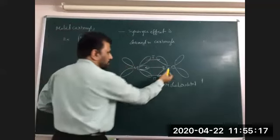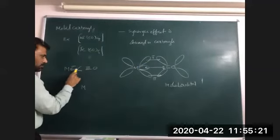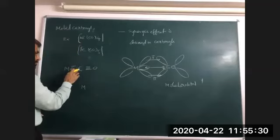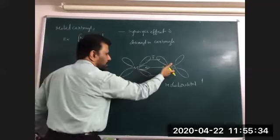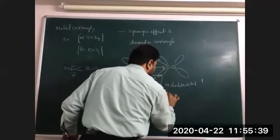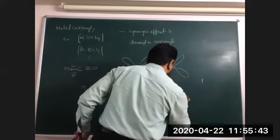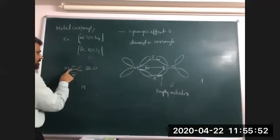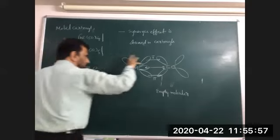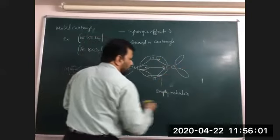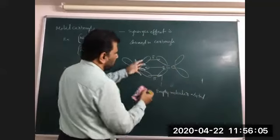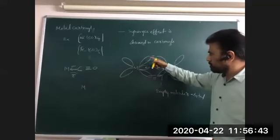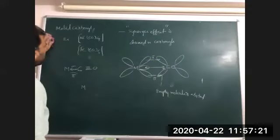The metal has filled d orbitals that overlap sideways with the empty molecular orbital of CO — this is the synergic effect. Carbon monoxide donates a lone pair to the metal (sigma/dative bond), and the metal back-donates from its filled d orbitals into the empty pi* molecular orbital of CO (pi bond). This mutual reinforcement forms two bonds — sigma and pi — making the metal-carbon bond very strong.